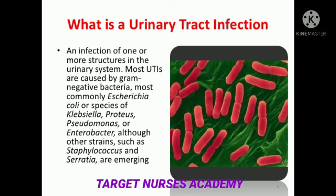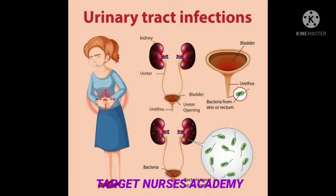UTI may be hospital acquired — catheter-associated urinary tract infection is also a common type. The causative organisms can be remembered with the mnemonic KEEP: K for Klebsiella, E for E. coli, another E for Enterobacter, and P for Pseudomonas.